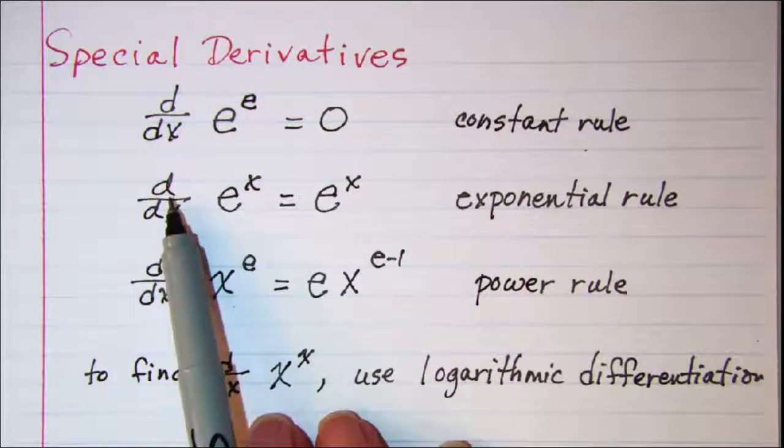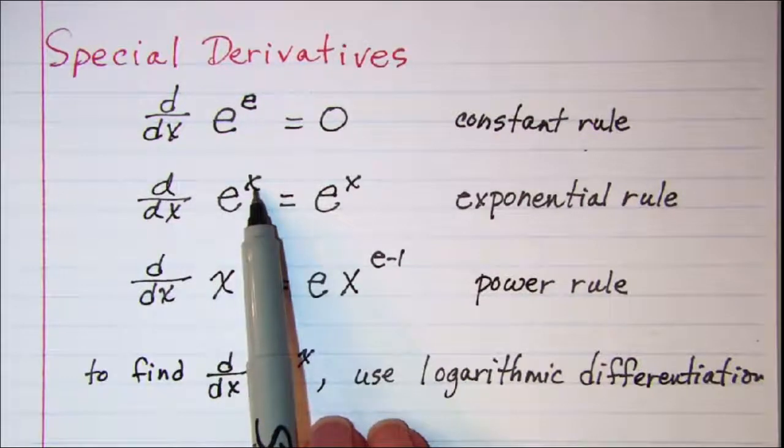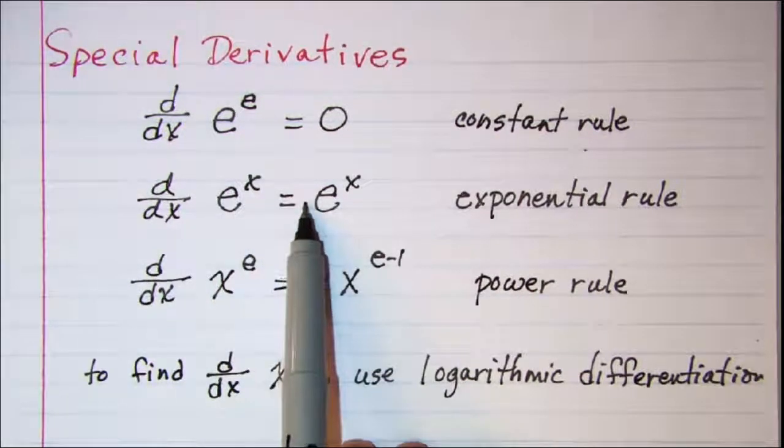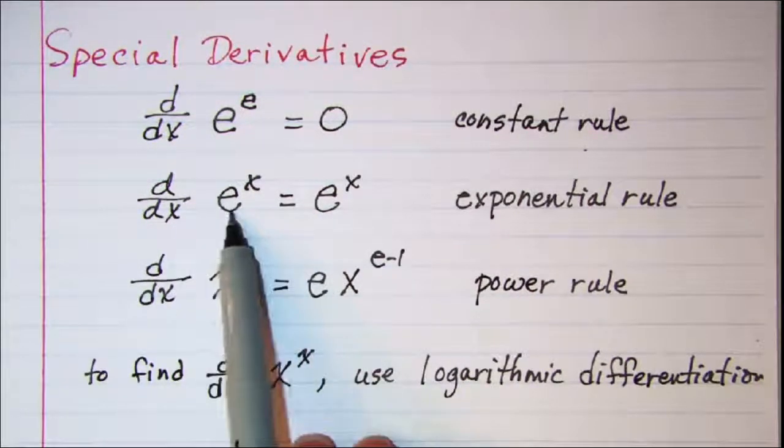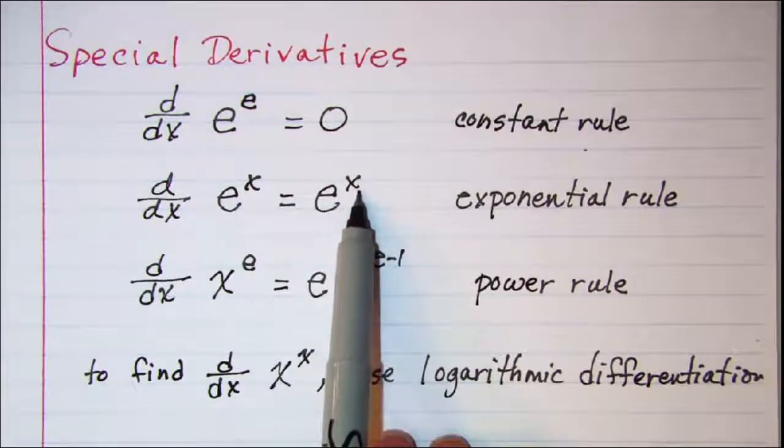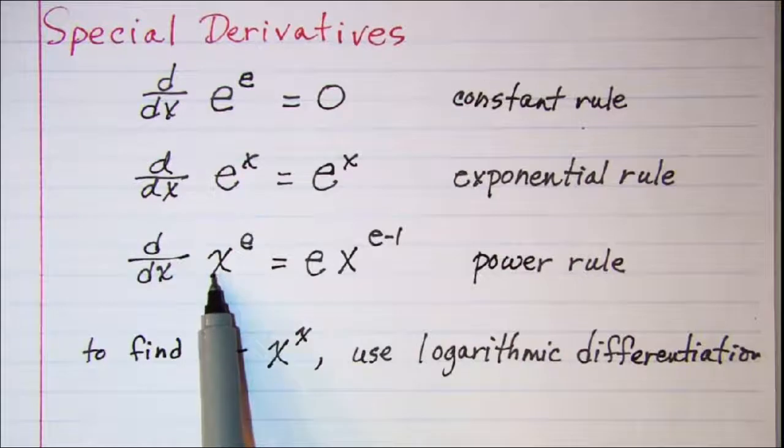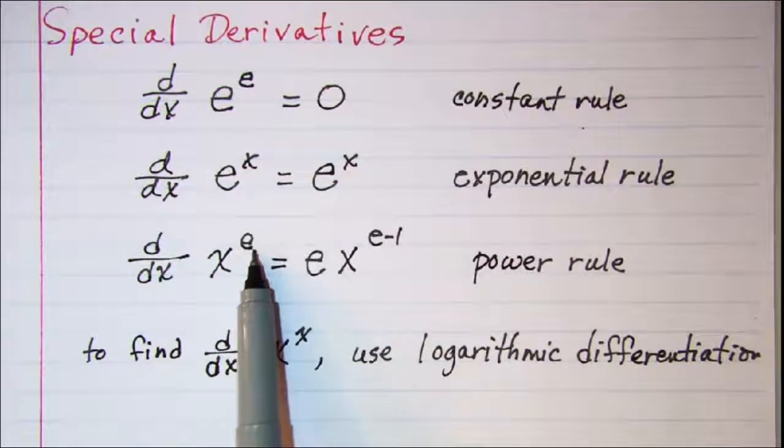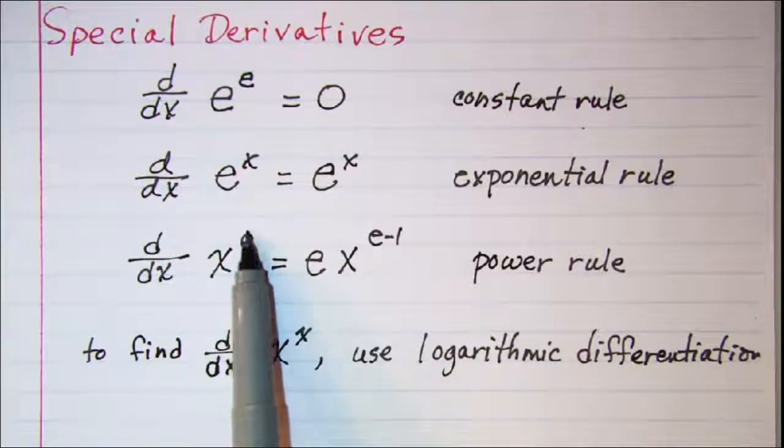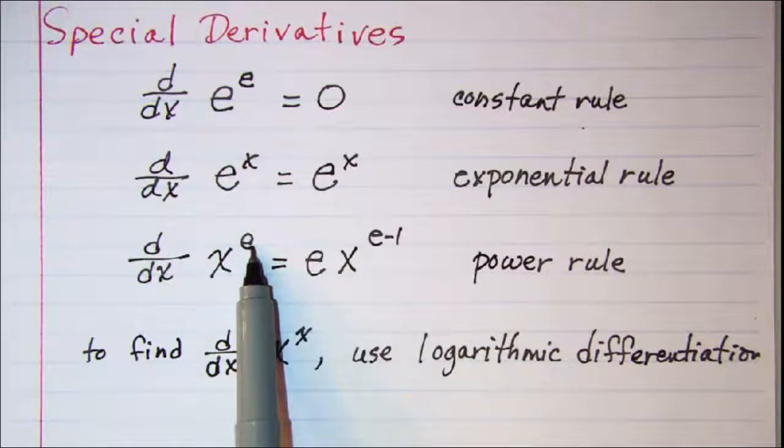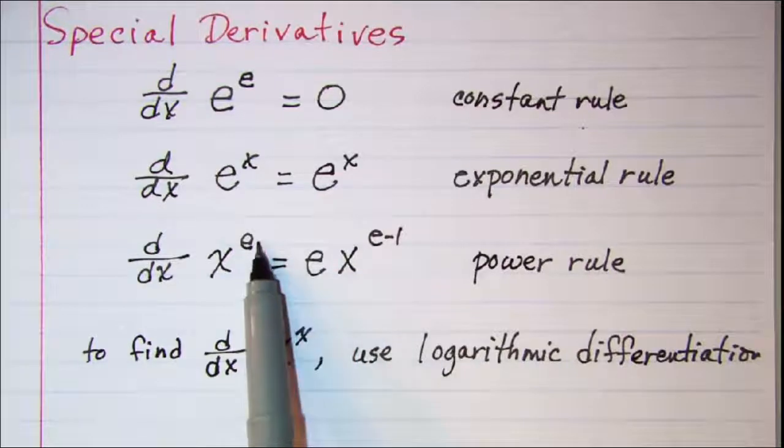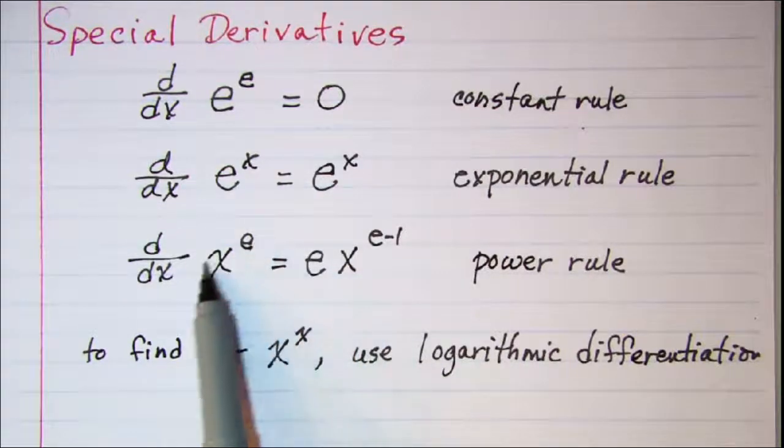Our second one, the derivative of e to the x, that's just our exponential rule. That derivative is equal to e to the x. And then the derivative of x to the e, remember that e is a constant, so anytime you have x to some number power you use the power rule.